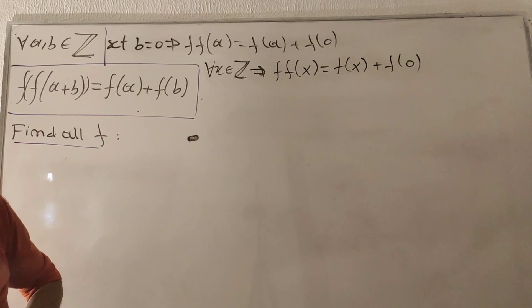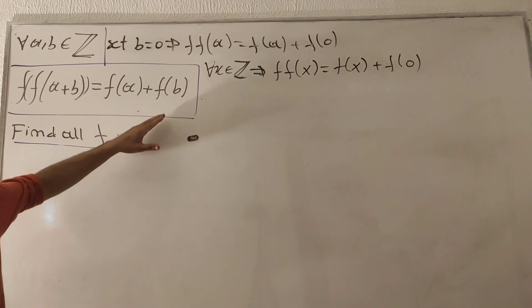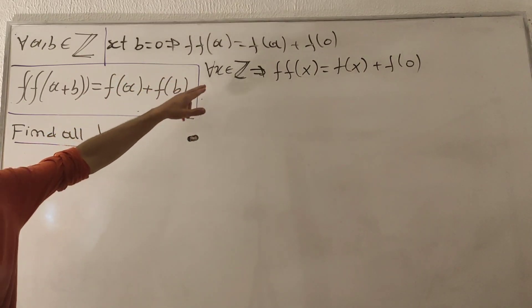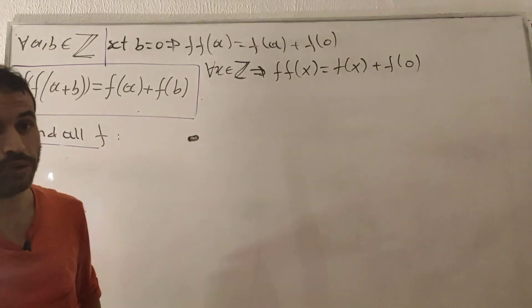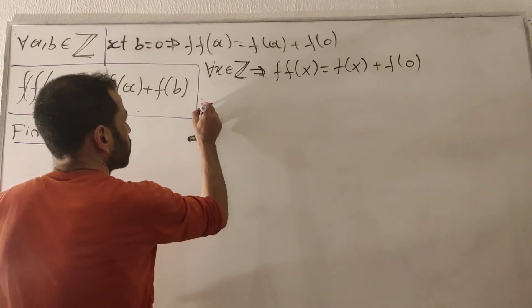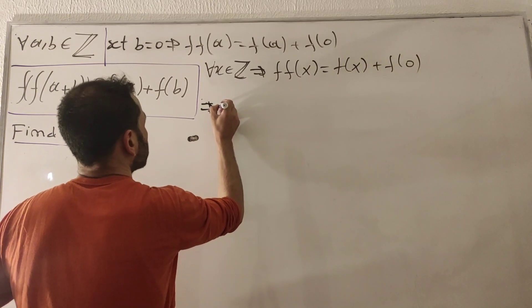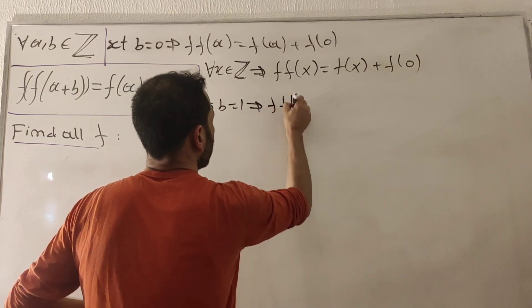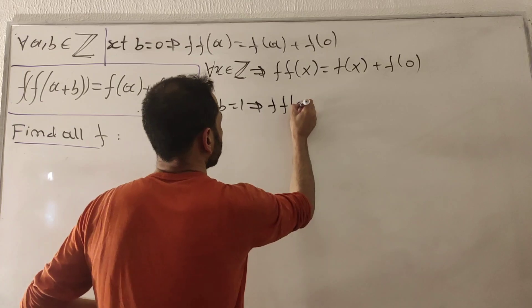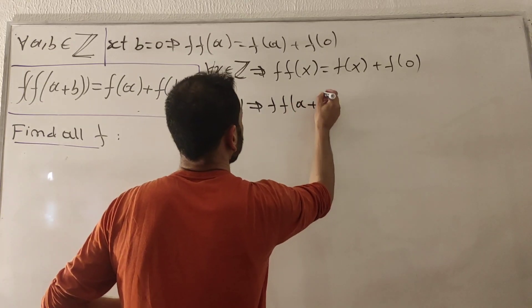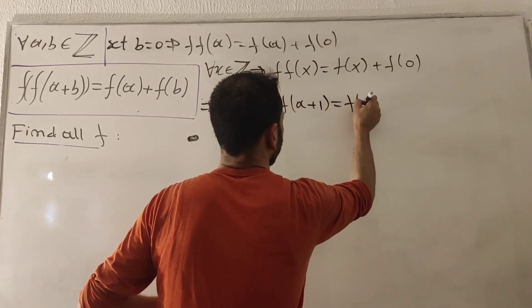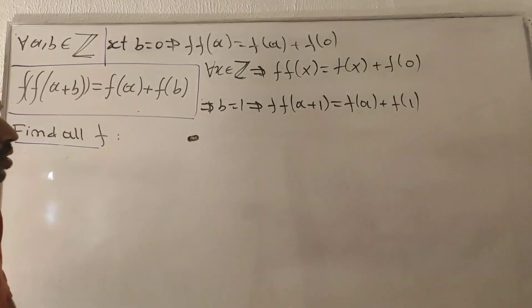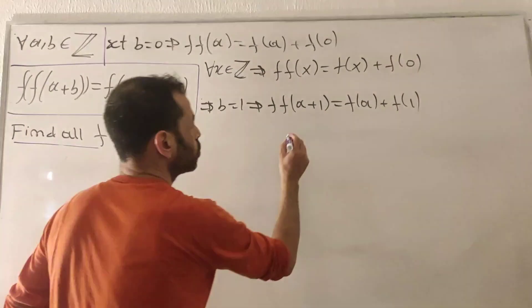Secondly, setting b = 1 and leaving a free, we get the expression f(f(a+1)) = f(a) + f(1).